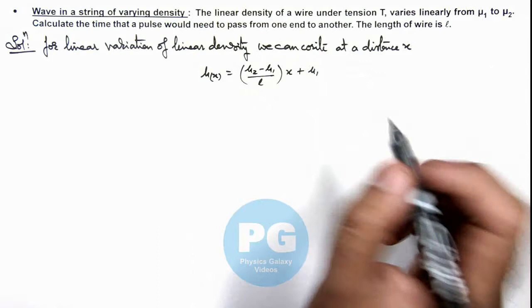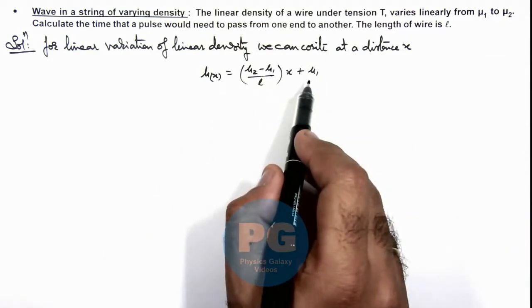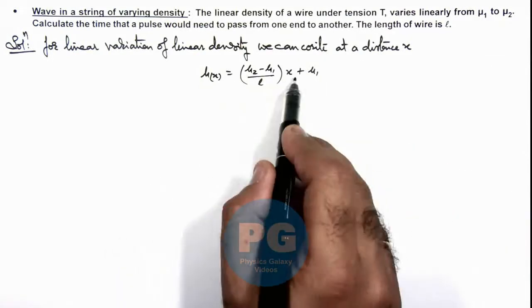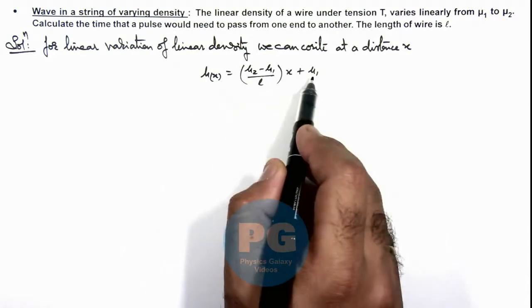Now, this is a direct relation we can easily obtain by taking μ as mx + c, where m and c can be obtained by boundary conditions.